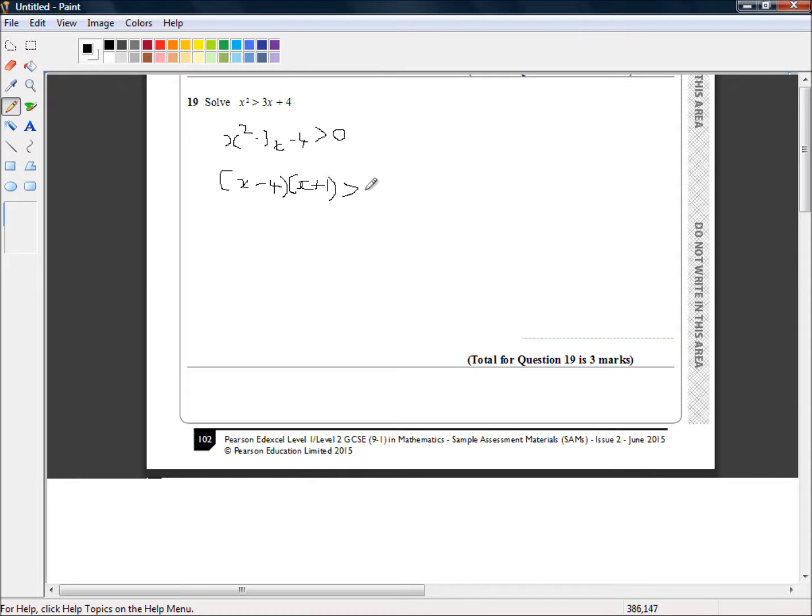And that's still greater than 0 because we haven't done anything. All we've done is factorize this left hand side. We can quickly do a reality check to make sure that we haven't done anything wrong. If we multiply these out we've got x squared plus x minus 4x. So plus x combined with minus 4x is going to be minus 3x and then minus 4 times 1 is minus 4. So that is correct.